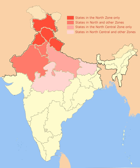North India has several universities. The Indian Institute of Technology, National Institute of Technology and Indian Institute of Management have campuses in several cities of North India such as Delhi, Kanpur, Roorkee, Sonipat, Varanasi, Lucknow, Kashipur, Indore and Patna. One of the first great universities in recorded history, Nalanda University, is in the state of Bihar. There have been plans for revival of this ancient university, including an effort by a multinational consortium led by Singapore, China, India and Japan.